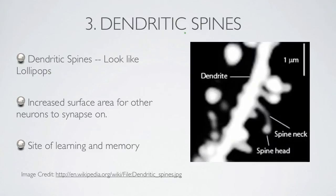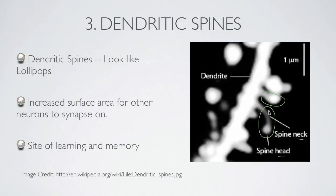If we zoom in even more and get closer to the dendrite's membrane, you will start seeing some tiny protrusions called the dendritic spines. These generally look like lollipops with a big head and a thinner neck. The dendritic spines provide an increased surface area for adjacent synaptic terminals to synapse on. They are thought to be involved in learning and memory.